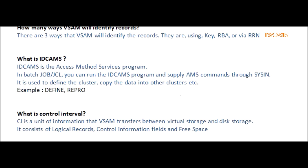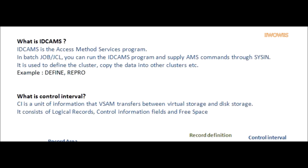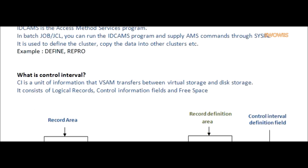Question: What is IDCAMS? Answer: IDCAMS is the Access Method Services program. In Batch Jobs/JCL, you can run the IDCAMS program and supply AMS commands through SYSIN. It is used to define the cluster, copy the data into other clusters, etc. Examples include DEFINE and REPRO.